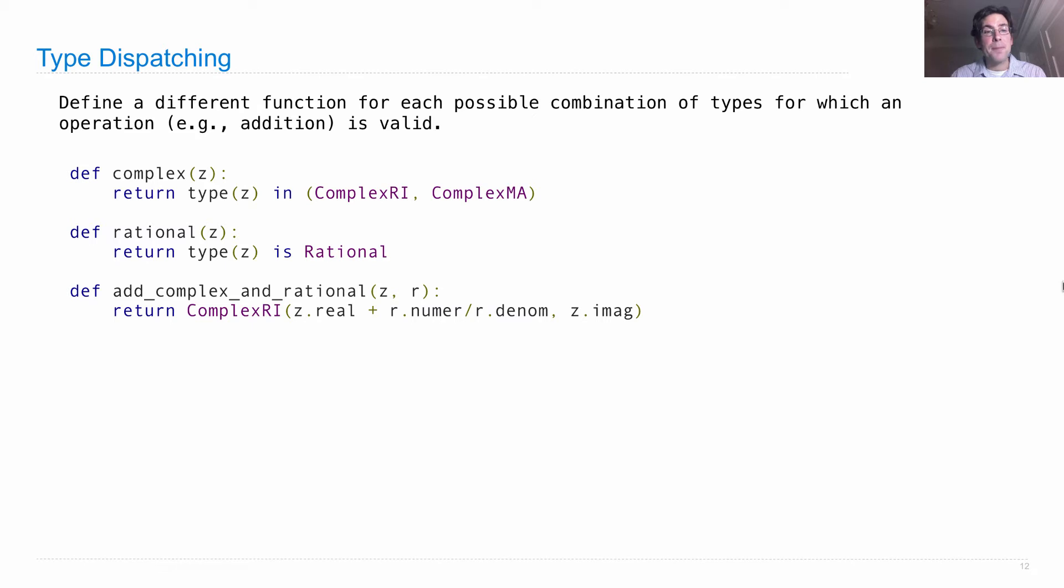add_complex_and_rational takes a complex number z and a rational number r, and it computes the sum, which is a complex number whose real component is the real component of z,